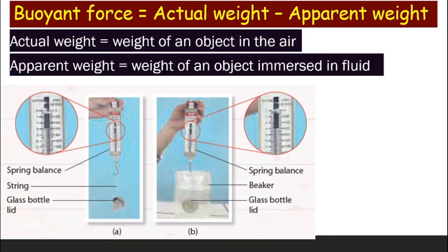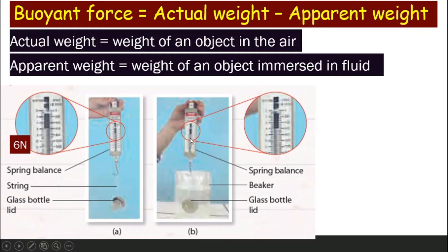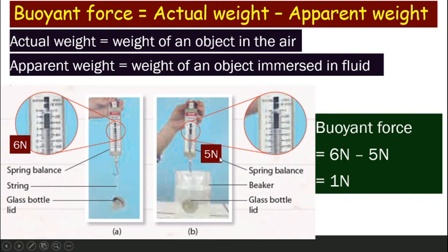For example, in this picture, you are measuring the weight of a glass bottle lid in air and also in liquid using a spring balance. If the glass bottle lid is hanging in the air, that is the actual weight — say, 6 N. When you immerse the glass bottle lid in water and measure the weight again, it will be a little less because the water is already helping to support it, and that reads 5 N. The force supporting the glass bottle lid in the water is the buoyant force. So, buoyant force equals actual weight minus apparent weight: 6 N minus 5 N equals 1 N.